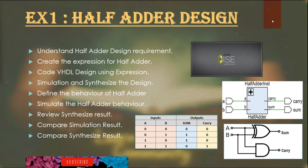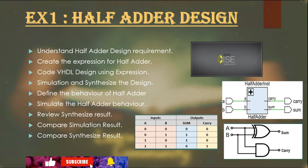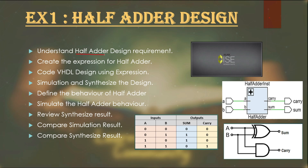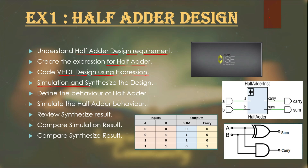Hi, this is Practical Exercise One. Today we will design a half adder using VHDL and review our designs. These are the topics we will cover today, starting from the basics, so if you are familiar with some topics you can jump to the next section. First we will understand the half adder and its requirements, then create a truth table and define the expression for the half adder. Next we will code our VHDL design using the expression we created, then simulate and synthesize our design.